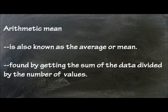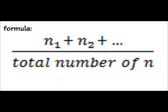The arithmetic mean is also known as the average or mean. It is found by getting the sum of the data divided by the number of values. The formula for the arithmetic mean is n sub 1 plus n sub 2 and so on divided by the total number of n.